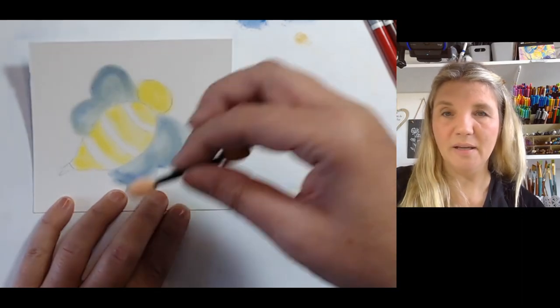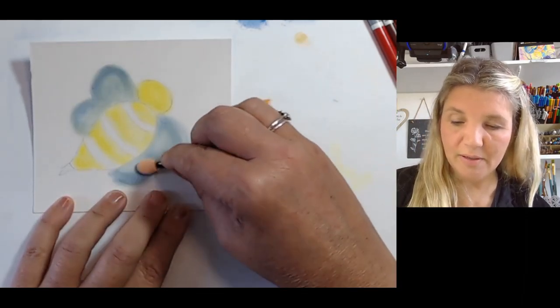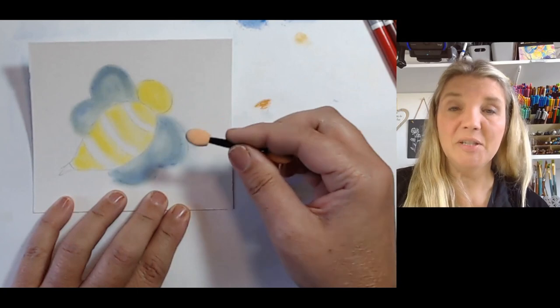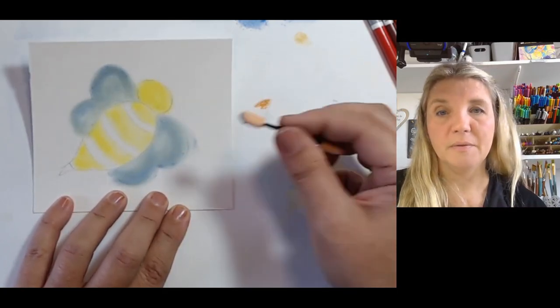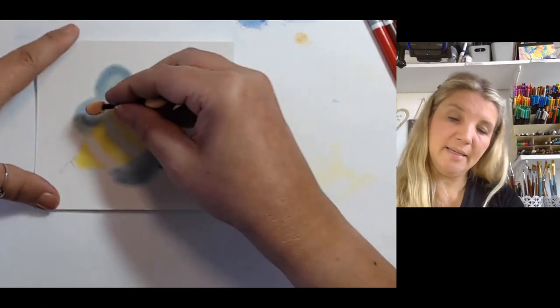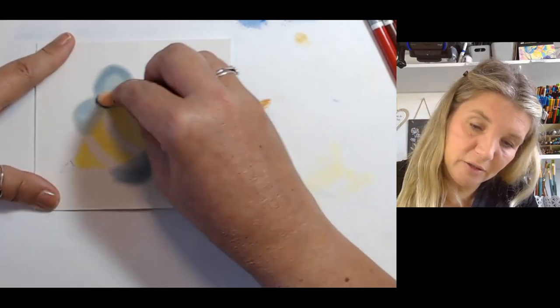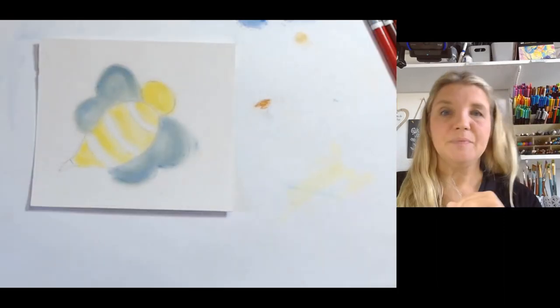Now I want it to be lighter in the middle and darker on the outside edges, but I don't want it to be too obvious, so I'm trying to blend it round.